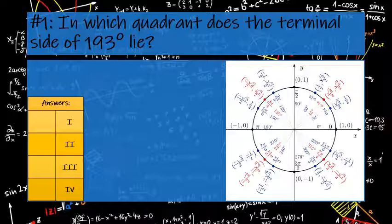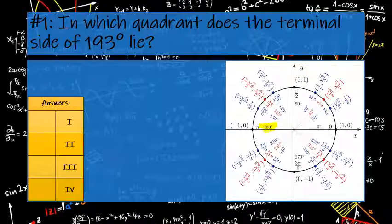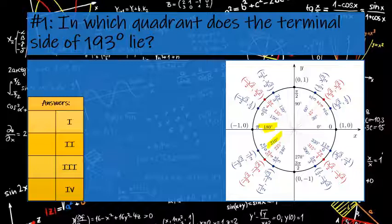If you're given the unit circle and you have a drawing to look at, you just need to find the two measurements that 193 falls between. So if I go around my circle from 0 to 360, I see right here I have 180 degrees and 210 degrees, and 193 would have to fall somewhere in between those, which would tell you that it lies in quadrant 3.